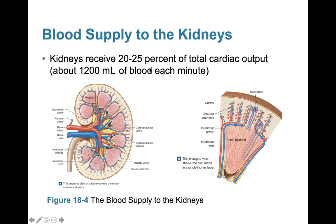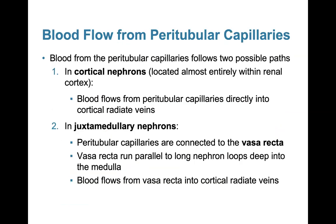The kidneys receive about 20 to 25 percent of the total cardiac output, about 1,200 mLs of blood each minute. Blood from the peritubular capillaries follows two possible paths. In cortical nephrons, located almost entirely within the cortex, blood flows from the peritubular capillaries directly into the cortical radiate veins. In medullary nephrons, the peritubular capillaries connect to the vasa recta, which runs parallel to the long nephron loops located in the medulla, then blood flows from the vasa recta into the cortical radiate veins.